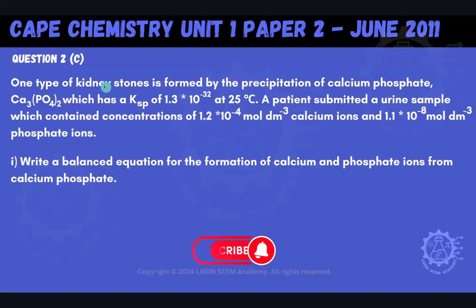Now, moving on to 2 part C. 2 part C says one type of kidney stones is formed by the precipitation of calcium phosphate, which has a Ksp of 1.3 times 10 to the negative 32 at 25 degrees Celsius. A patient submitted a urine sample which contained concentrations of 1.2 times 10 to the negative 4 mole per dm cubed of calcium ions and 1.1 times 10 to the negative 8 mole per dm cubed of phosphate ions. Now, for part one, we have to write a balanced equation for the formation of calcium and phosphate ions from calcium phosphate.